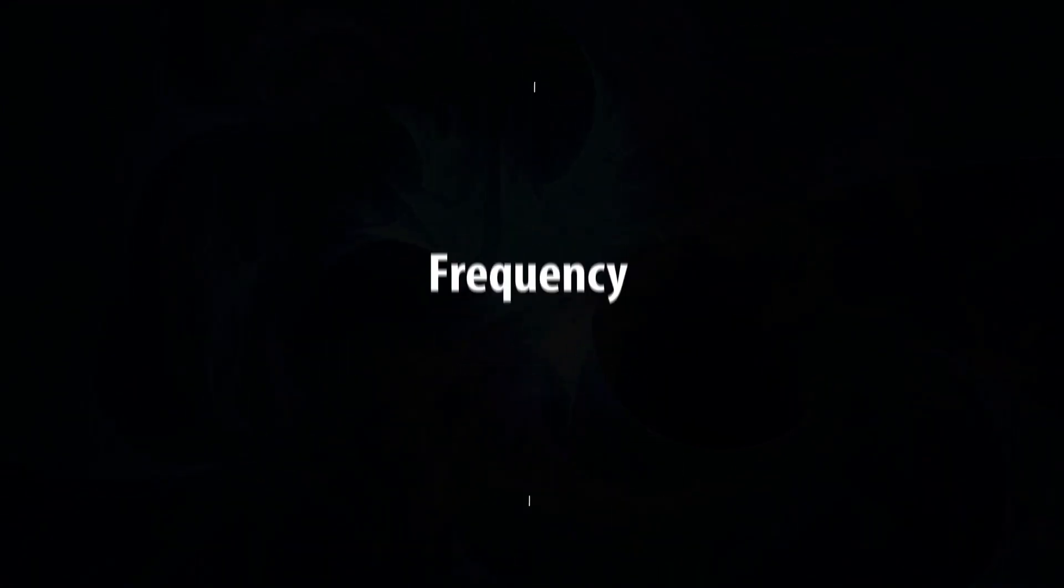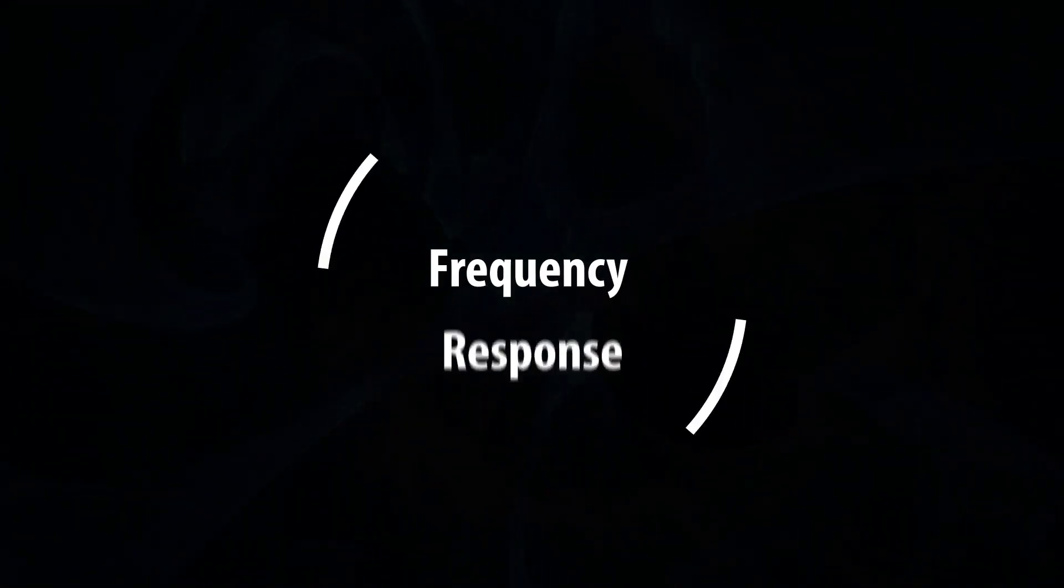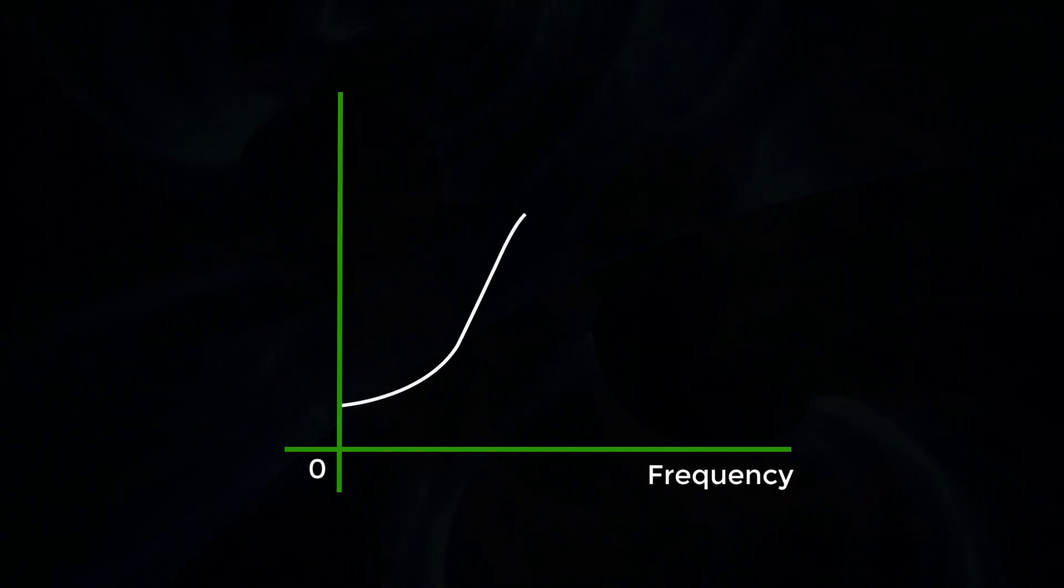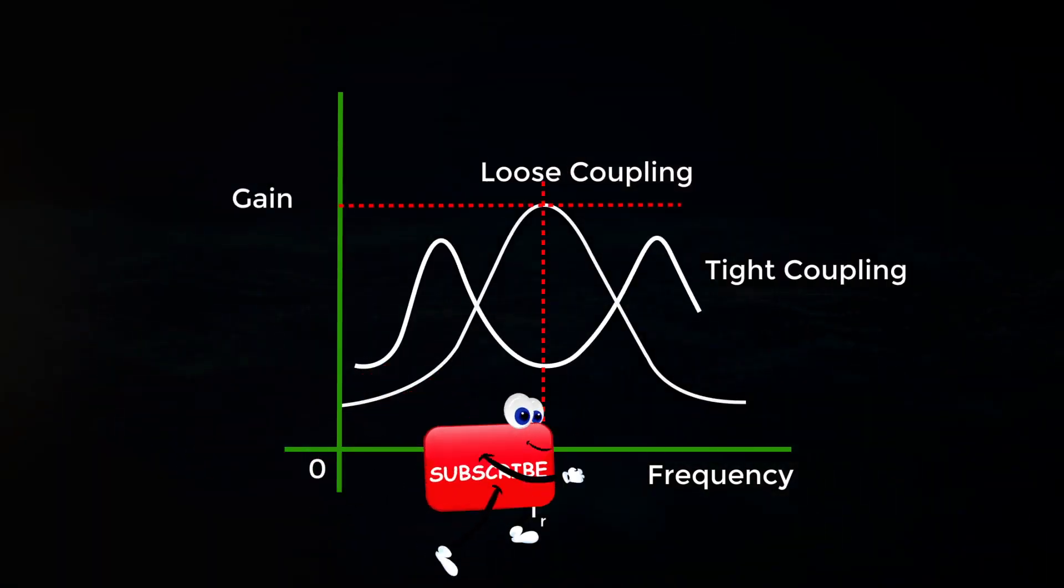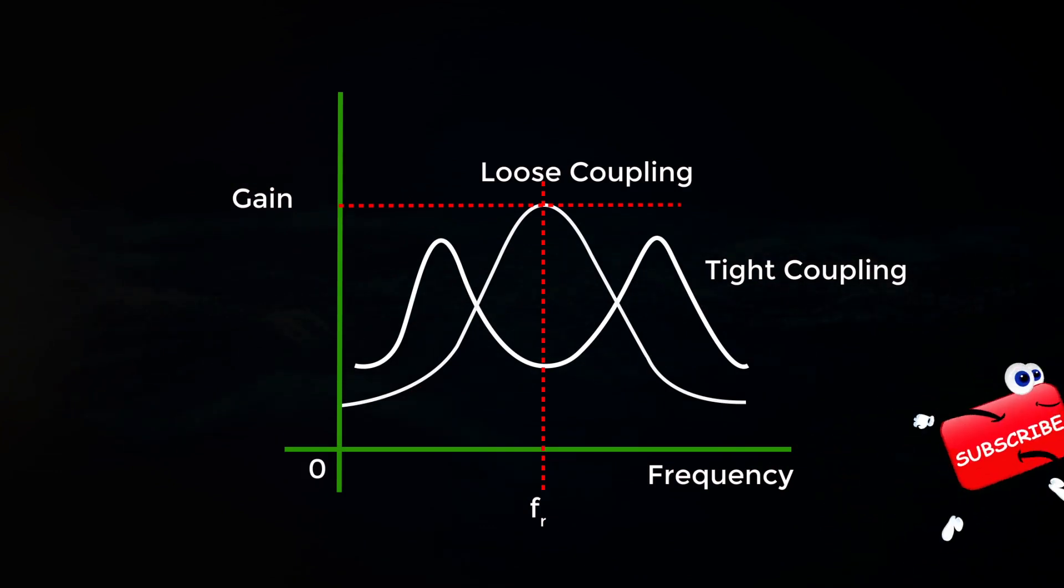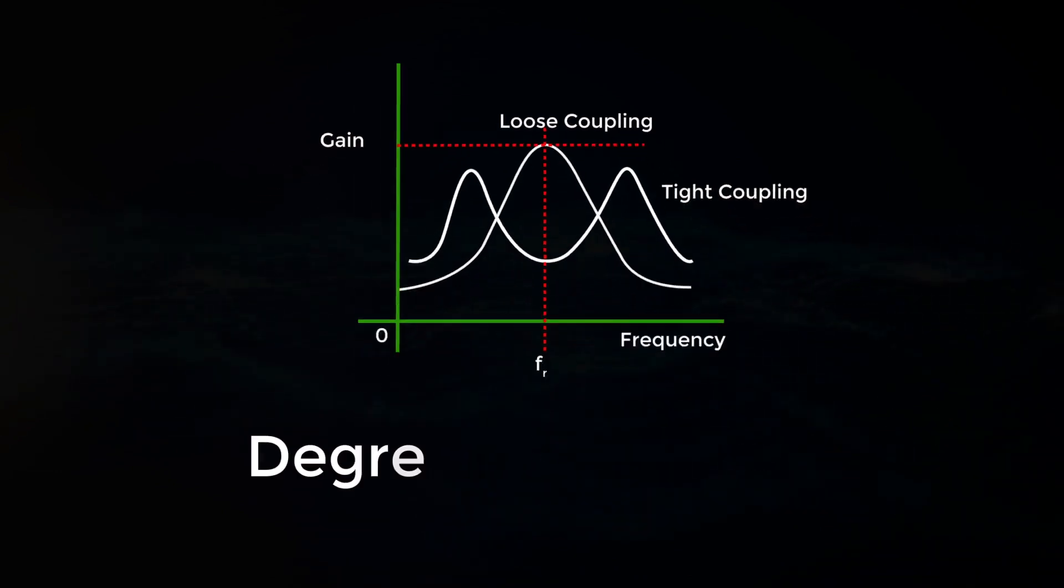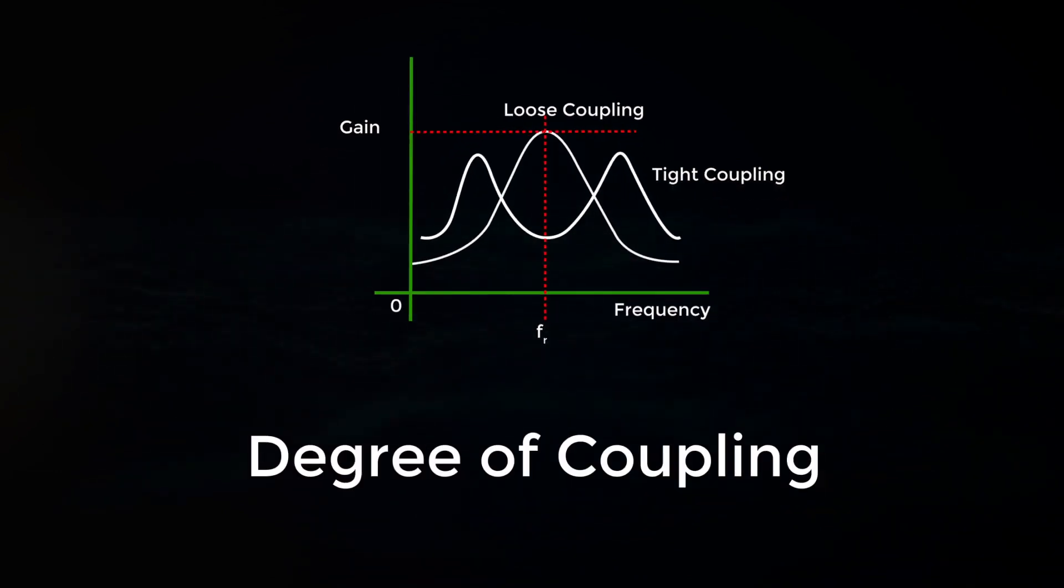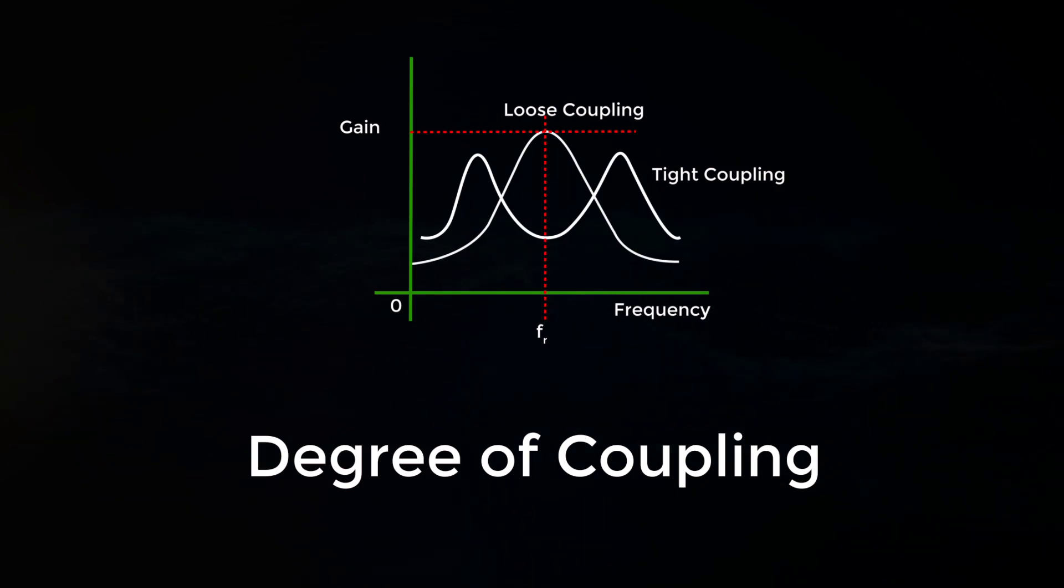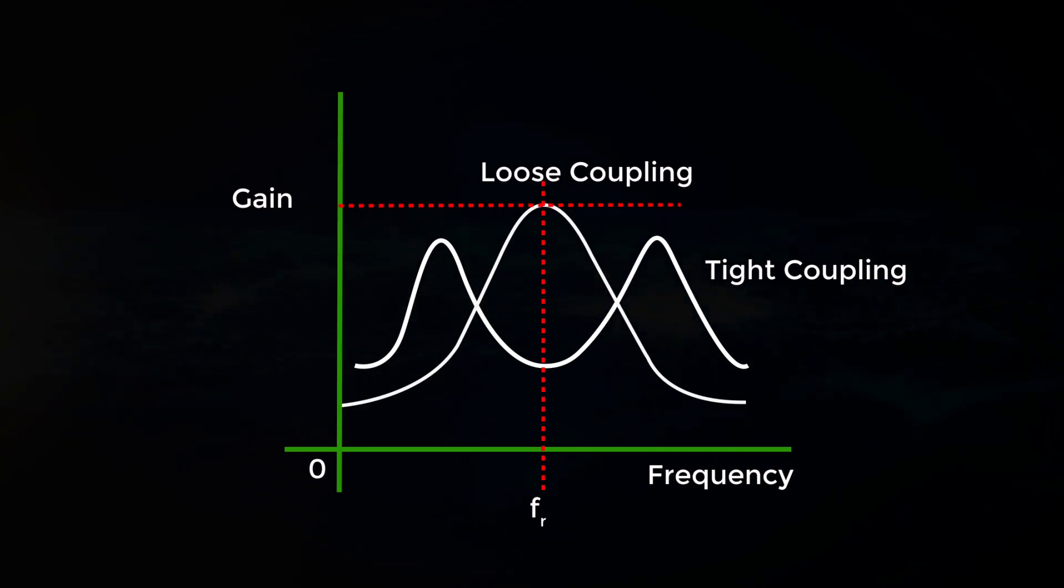Frequency response: The double tuned amplifier has the special feature of coupling, which is important in determining the frequency response of the amplifier. The amount of mutual inductance between the two tuned circuits states the degree of coupling, which determines the frequency response of the circuit.